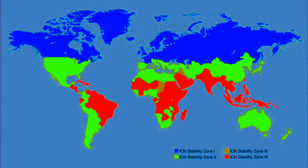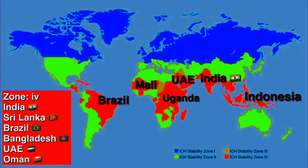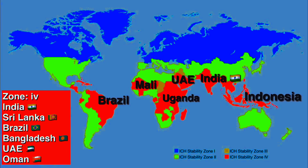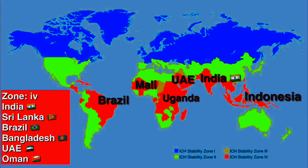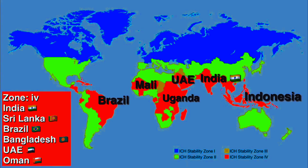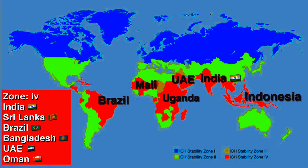Zone 4 is the last zone. In zone 4, India comes along with its neighboring countries such as Sri Lanka, Pakistan, Indonesia, Bangladesh, UAE, and Oman — they all fall under zone 4.